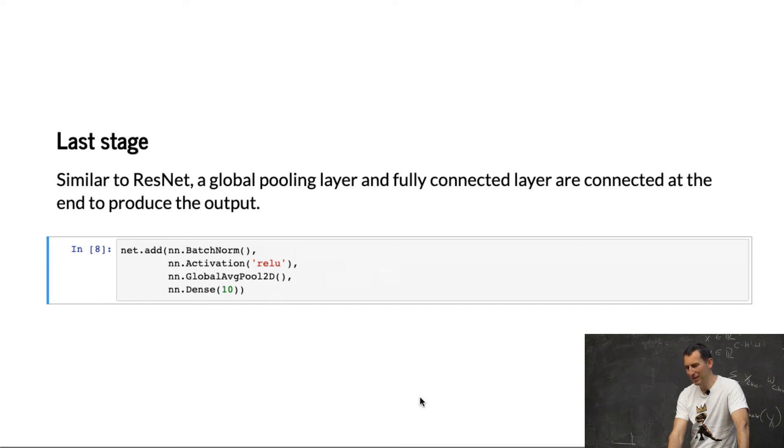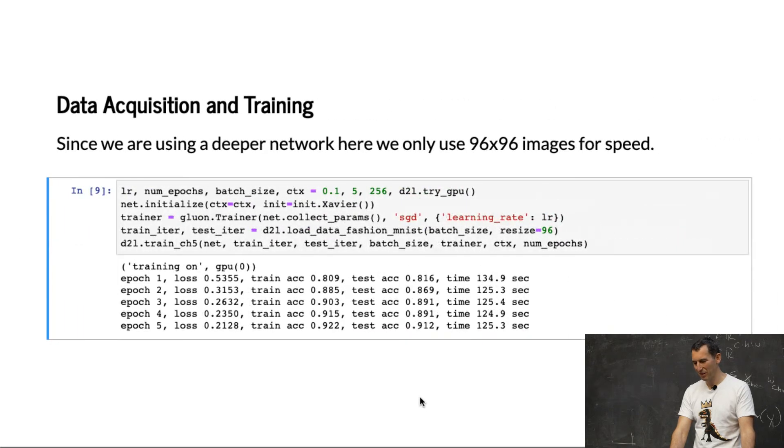Last stage is just global averaging. You can see this kind of gets pretty predictable and boring because all those networks share a lot of common design patterns, which is good because at least now there is a common design pattern of how one goes and constructs object recognizers. Then you train.